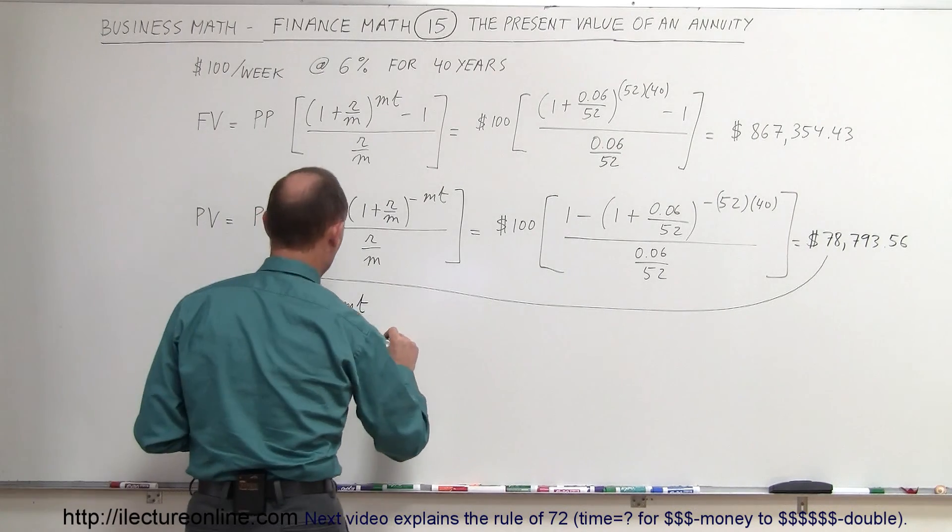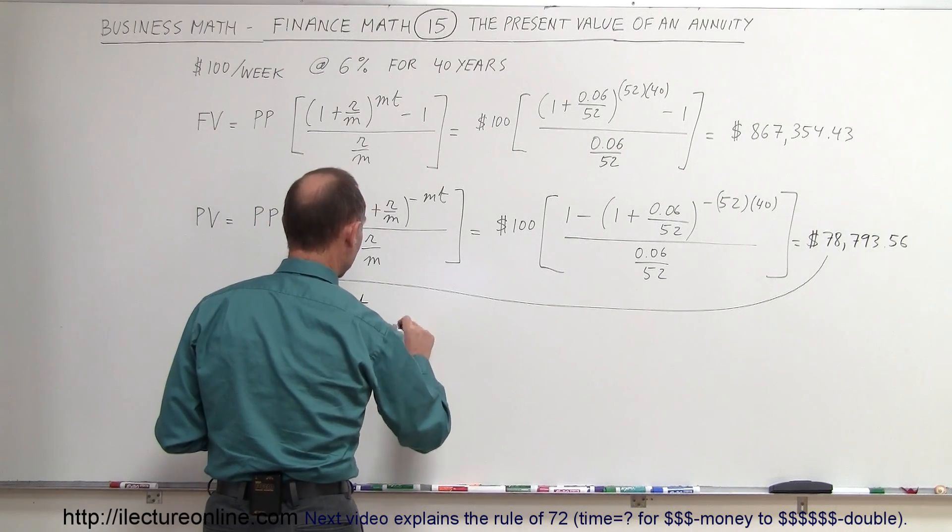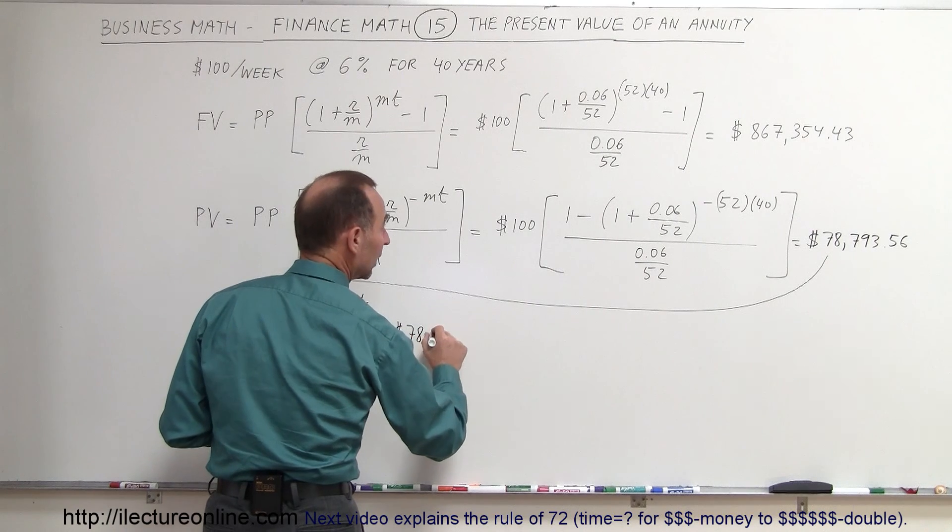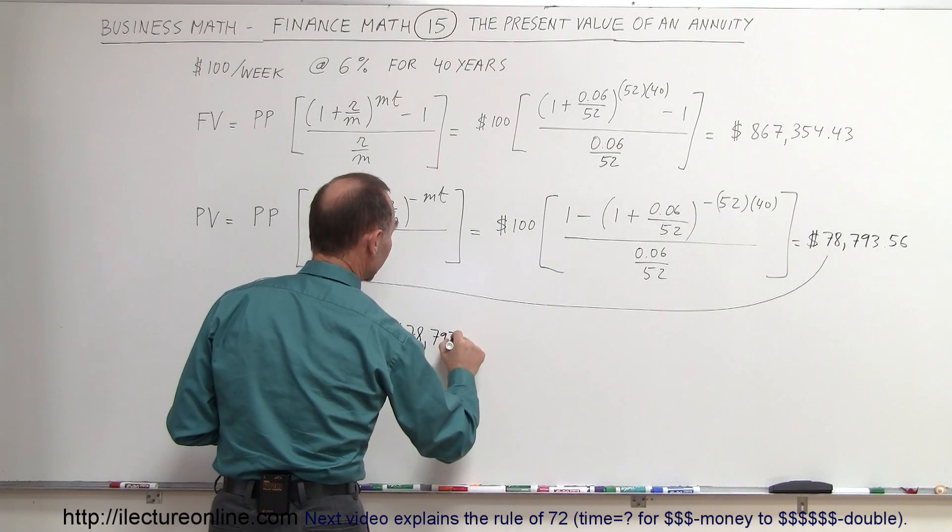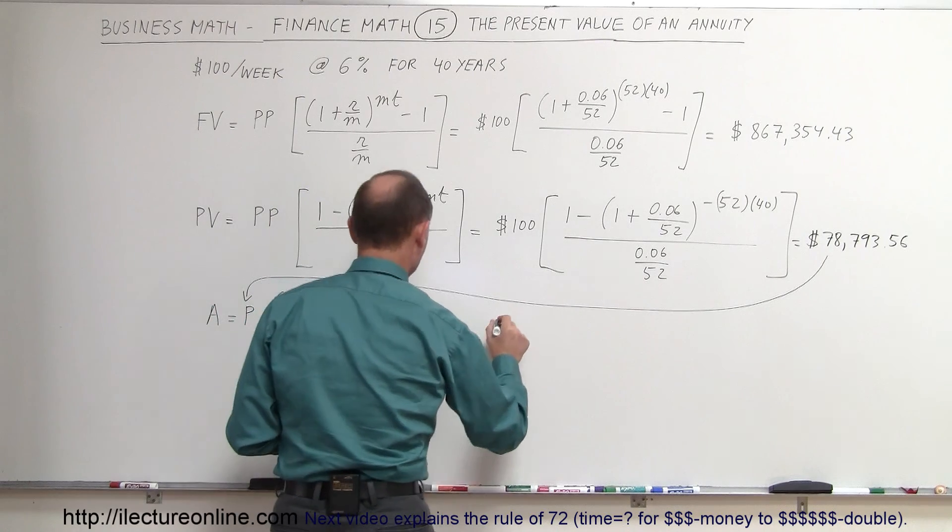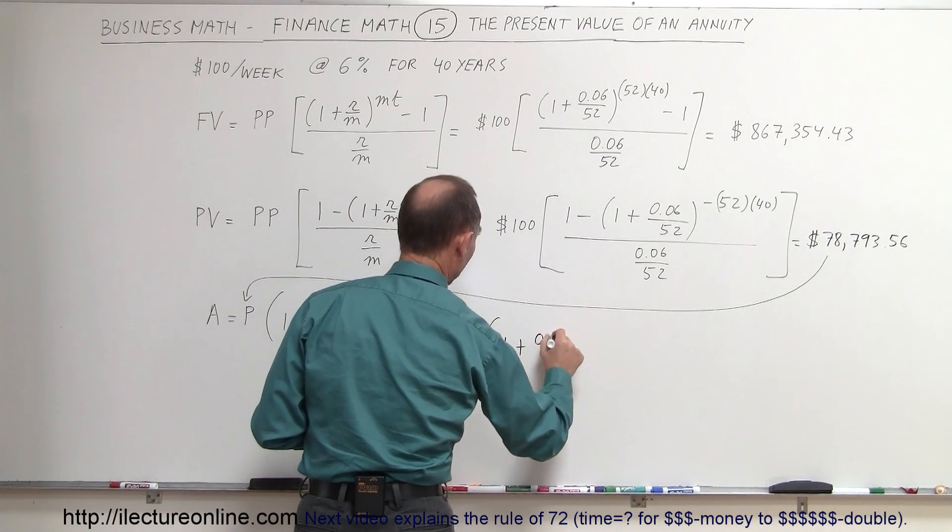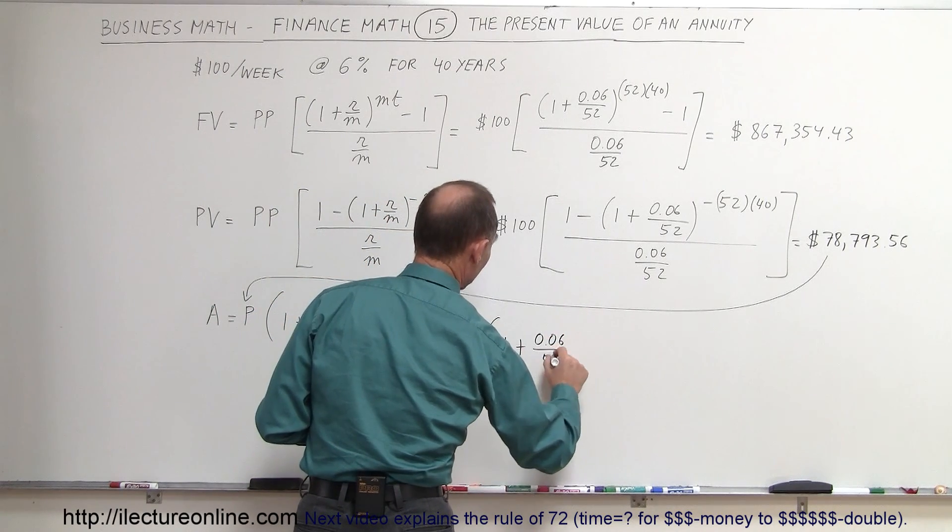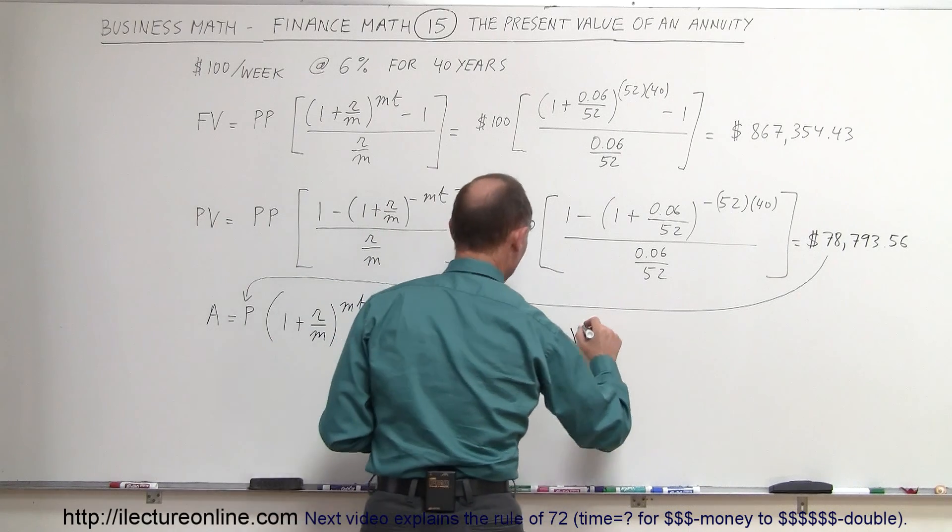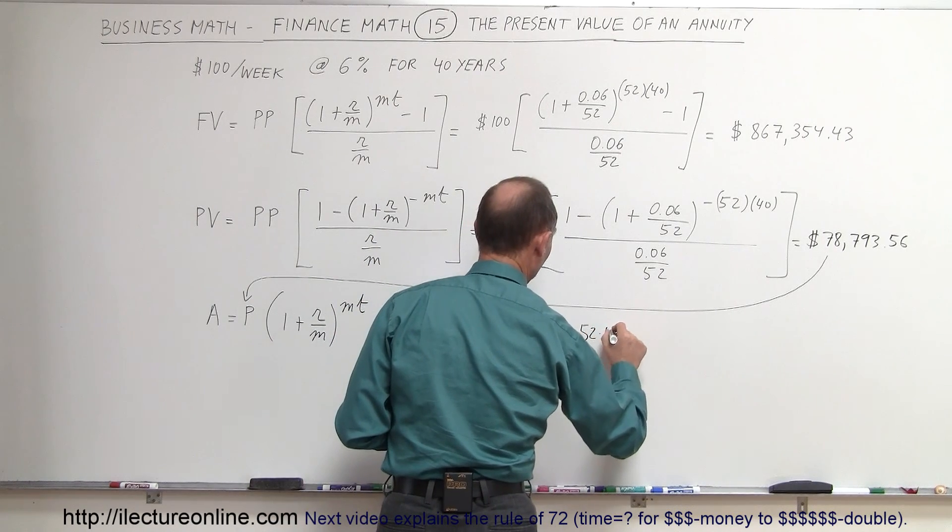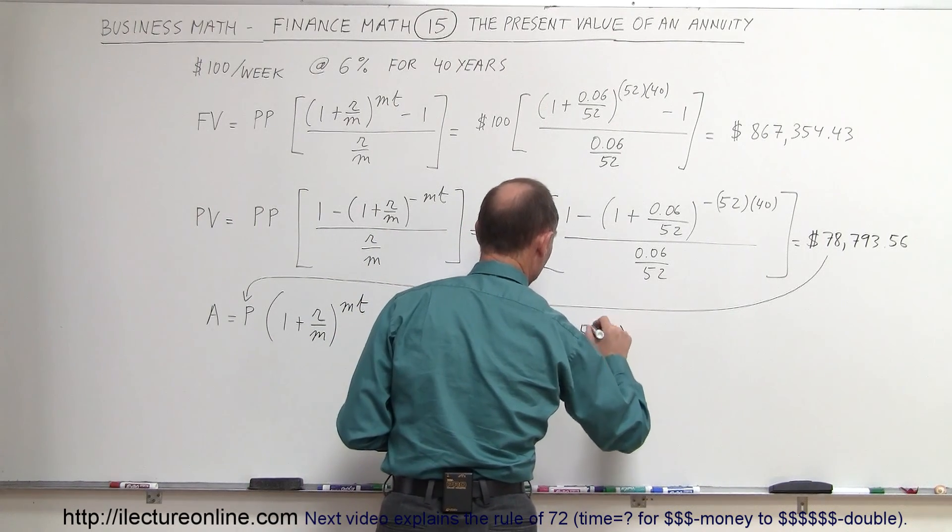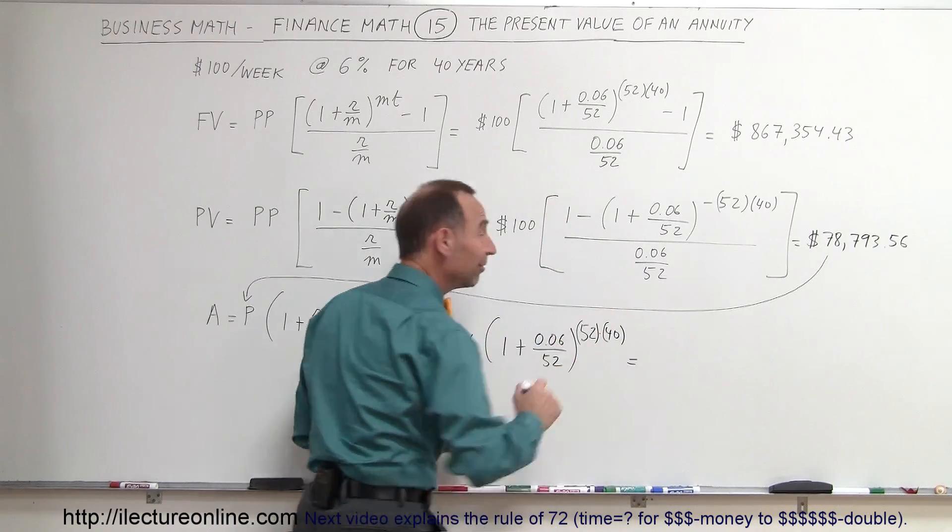So let's see if we get the same amount. It would be $78,793.56 times 1 plus the rate divided by 52, raised to the 52 times 40 power. Let's see if we get the same amount.